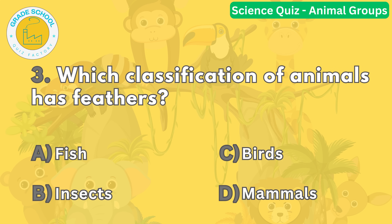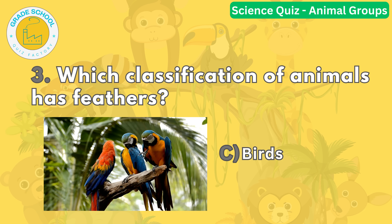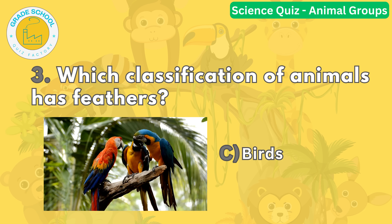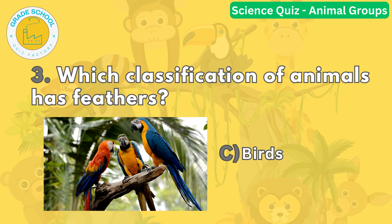Question number three. Which classification of animals has feathers? The correct answer is letter C. Birds are unique creatures that have evolved feathers for flight, insulation, and display. They are the only animals with feathers.